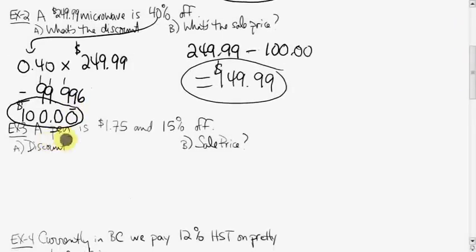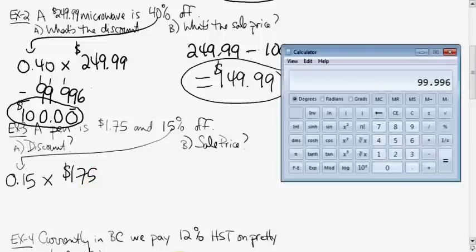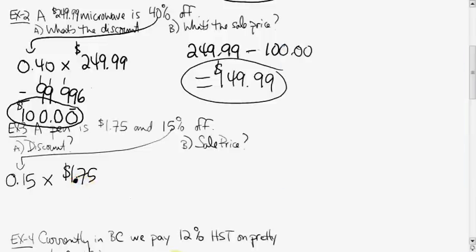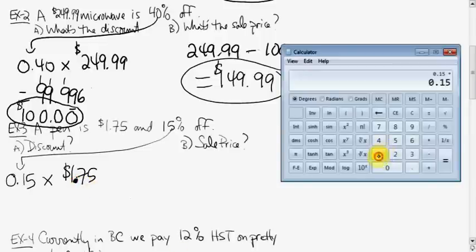Okay, a pen is $1.75 and 50% off. Discount, sale price, what is it? No big deal. Take the price, or take the percentage first. Nothing really matters. You can start with the price first if you want. 0.15 is the percent to a decimal. Multiply it by $1.75. When you times those two things together, 0.15 times $1.75, you get 0.2625.